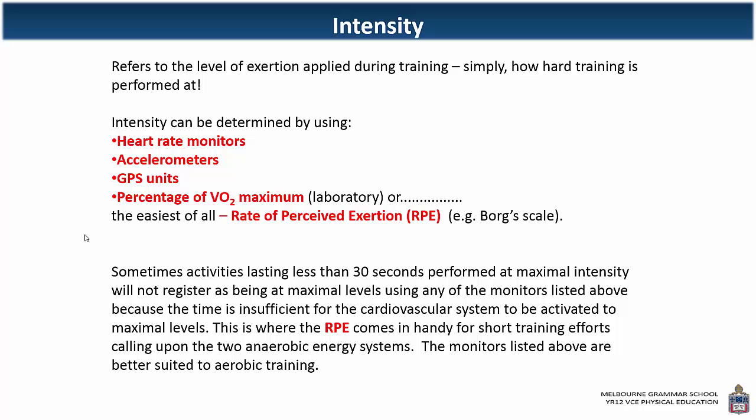With a heart rate monitor, we often speak about short interval training being at maximum or 100% of heart rate. In actual fact, due to the lag that occurs from the cardiovascular system's response, if we're speaking specifically about heart rate, it can be difficult to determine if we're working maximally — which is why rate of perceived exertion works really well. When activity lasts less than 30 seconds at maximal effort, it doesn't register as maximal because of that lag effect and the inability of the cardiovascular system to be fully activated.